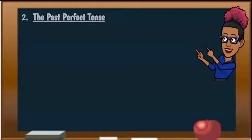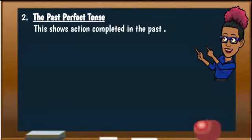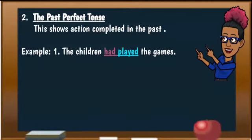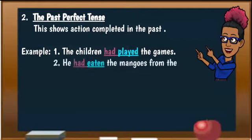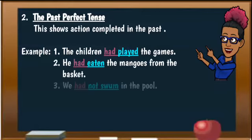Now let's move on to the past perfect tense. This shows action completed in the past. Some examples: the children had played the games; he had eaten the mangoes from the basket; and we had not swum in the pool.